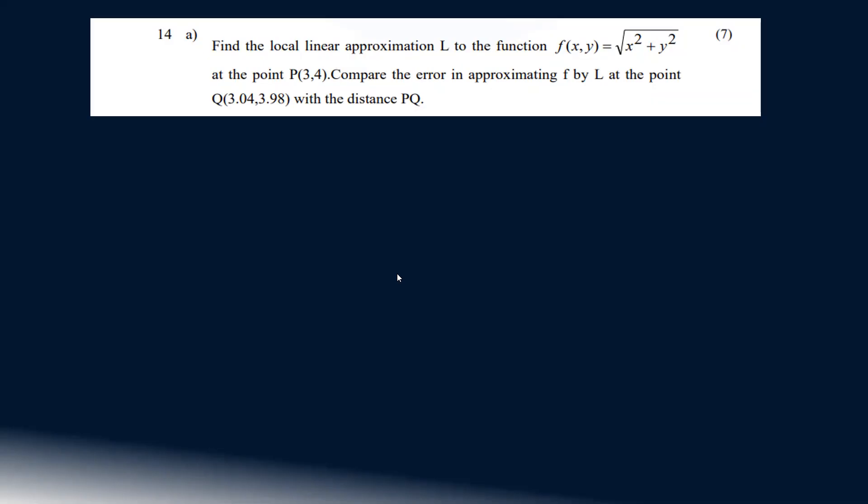Find the local linear approximation L to the function f(x,y) = √(x² + y²) at the point P(3, 4). Compare the error in approximating f by L at the point Q(3.04, 3.98) to the distance PQ.